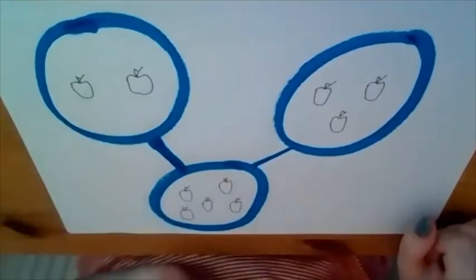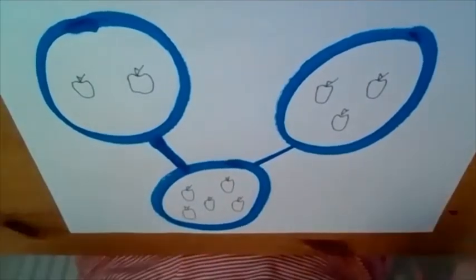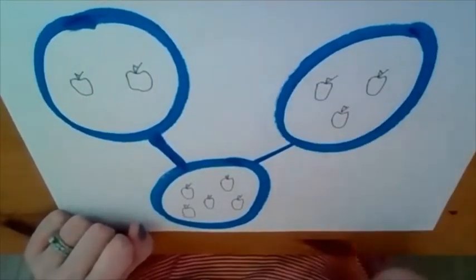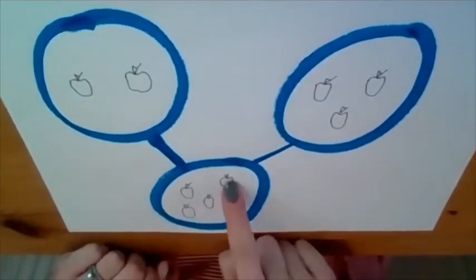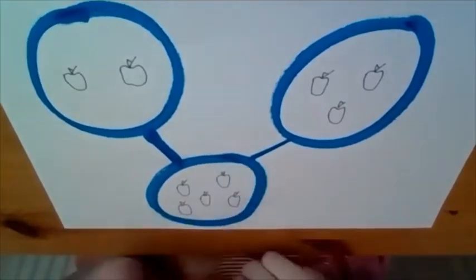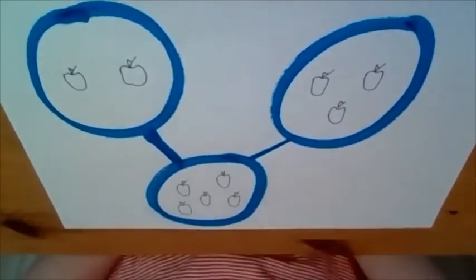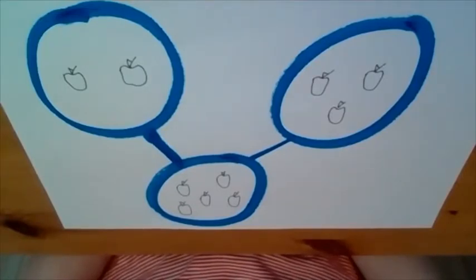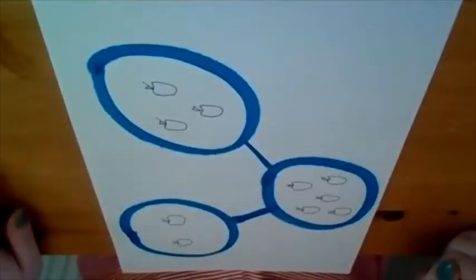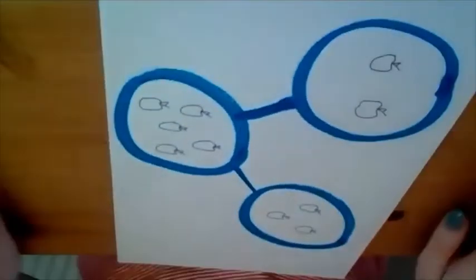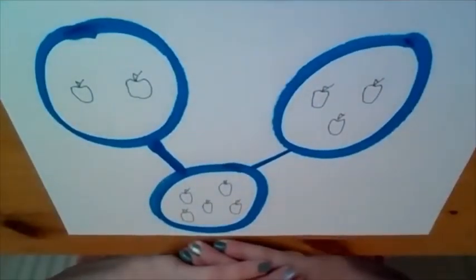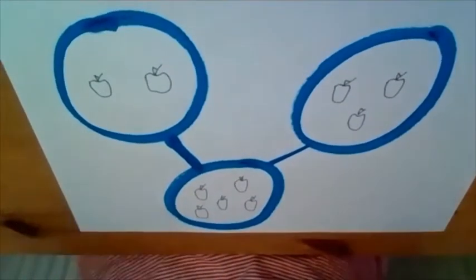Here it is. So I've got apples — they're meant to be apples. I've got two apples here, three apples here, and five apples here. Now my question is: what is the hole? We can move it around any way we want to — it doesn't matter if they're upside down or back to front — but I need to work out what the hole is. So which ones are my two parts and which ones are my hole?